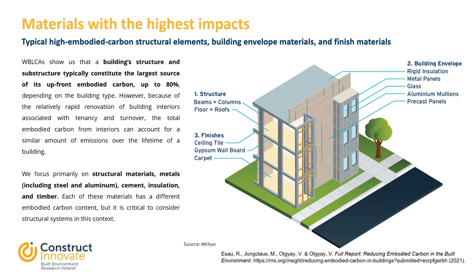Each of these materials has a different embodied carbon content, but it is critical to consider structural systems in this context. The figure shows the usual building components such as the structure, which consists of beams, columns, floors and roofs. The building envelope consists of insulation, metal panels, glass, aluminium mullions and precast panels. Finally, the finishes contain ceiling tiles, gypsum board and carpeting.